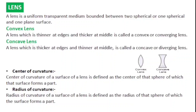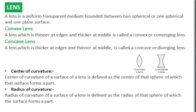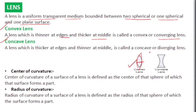The next important topic is lenses and the lens maker formula. A lens is a uniform transparent medium bounded between two surfaces — either two spherical surfaces, or one spherical and one plane surface. A convex lens is thicker at the middle and thinner at the edges — also called a converging lens. A concave lens is thinner at the middle and thicker at the edges — also called a diverging lens. For a convex lens, focal length is always positive; for a concave lens, it is always negative.